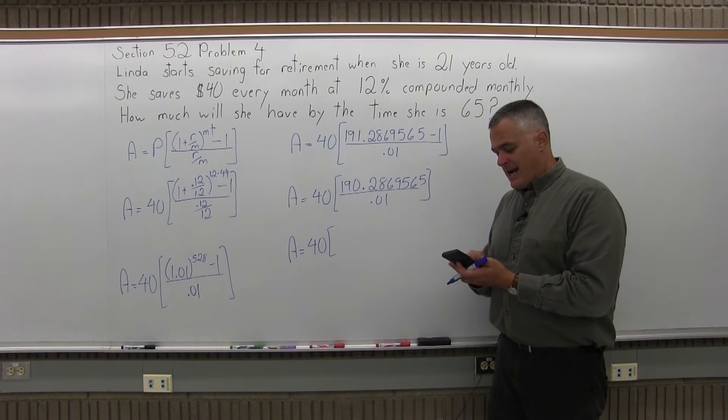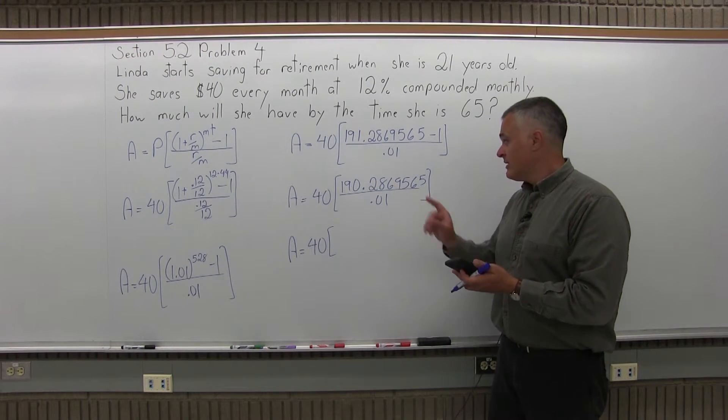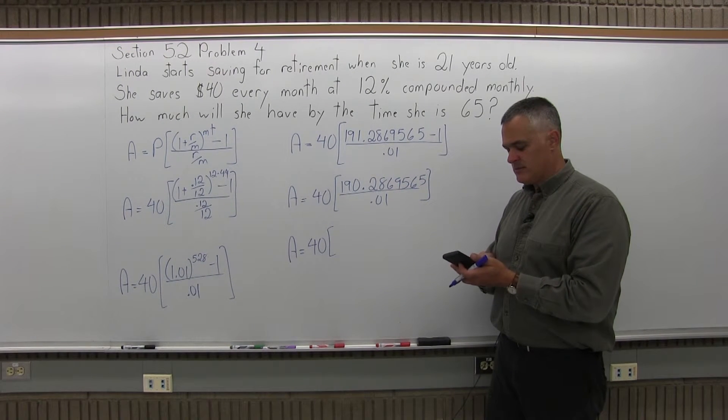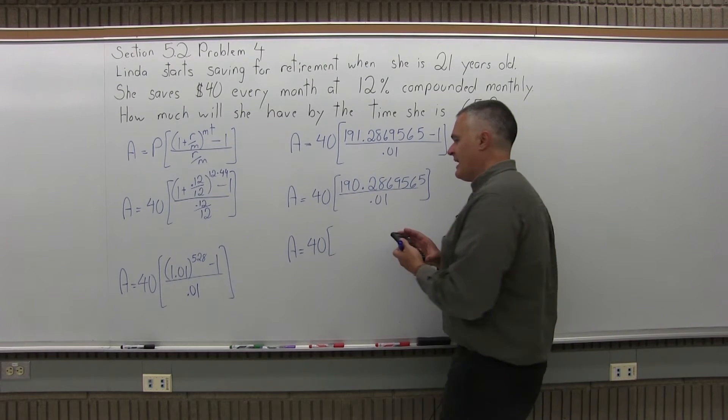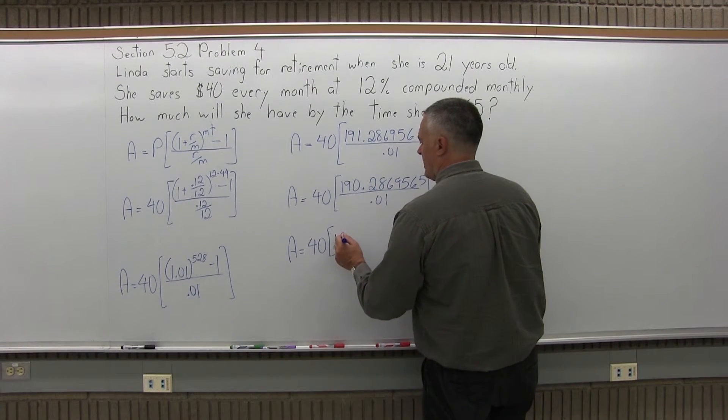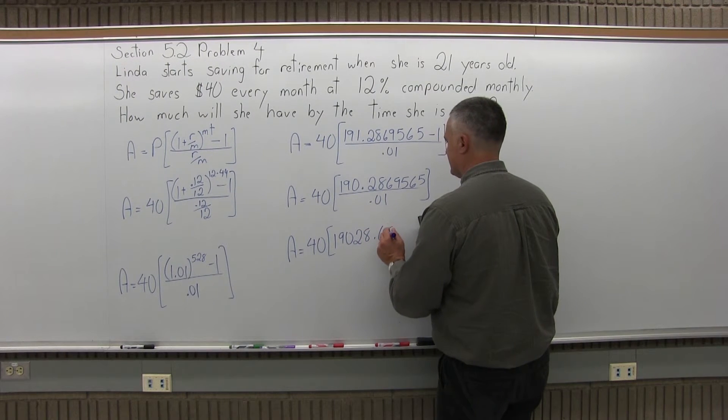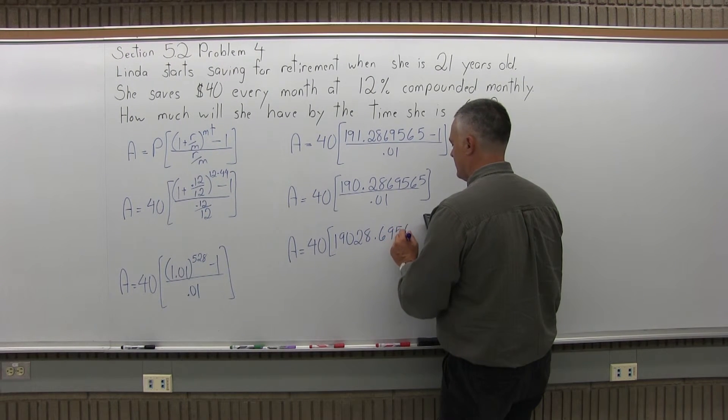I'm going to do 190.286956 divided by 0.01. And that's going to give me 19,028.69565.